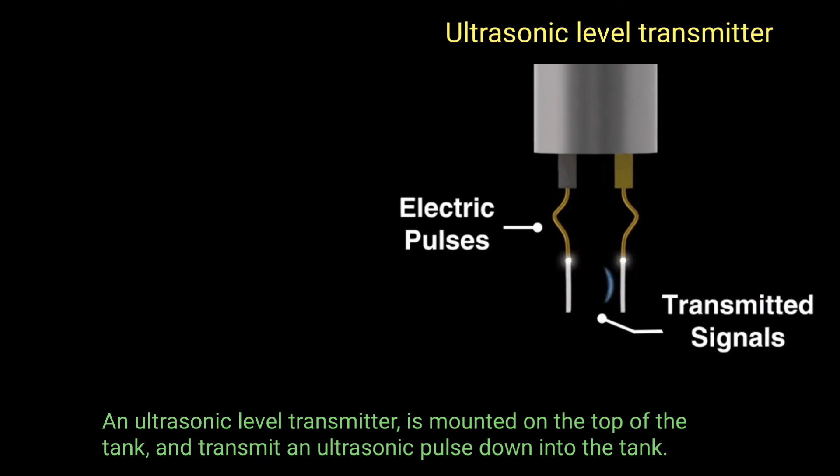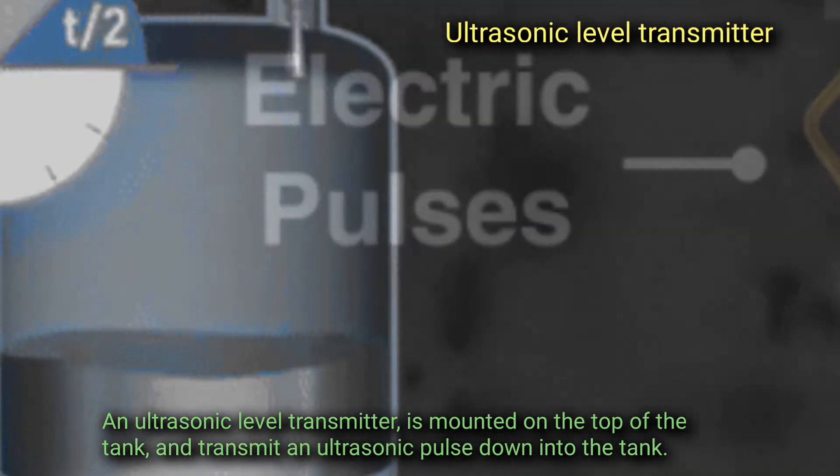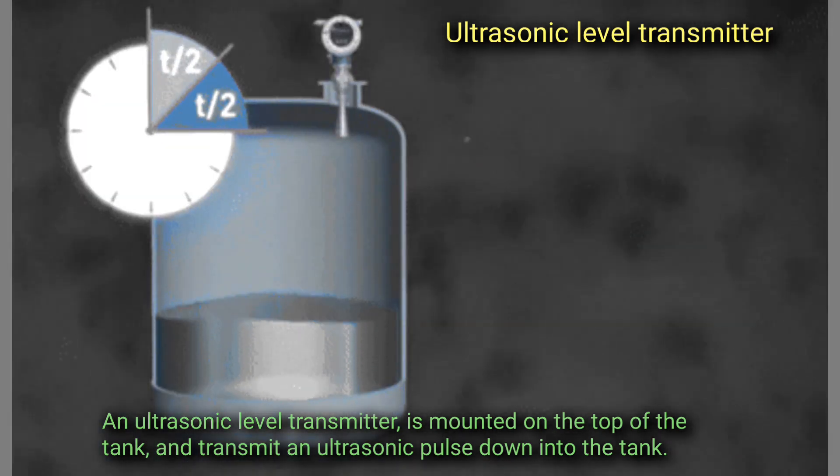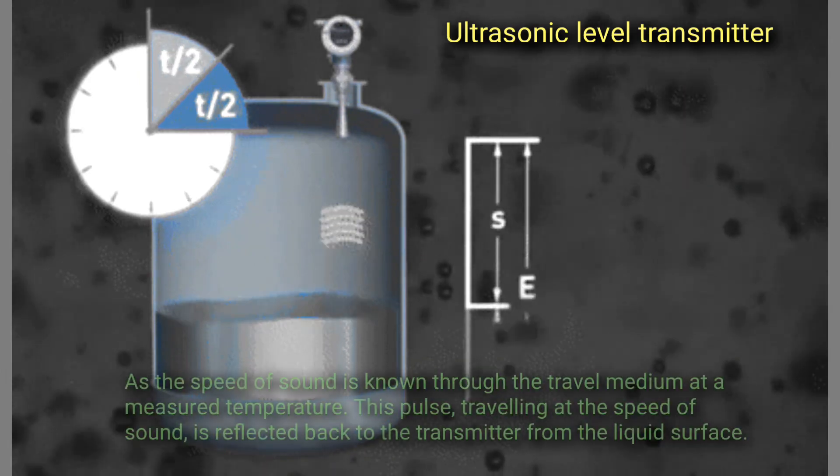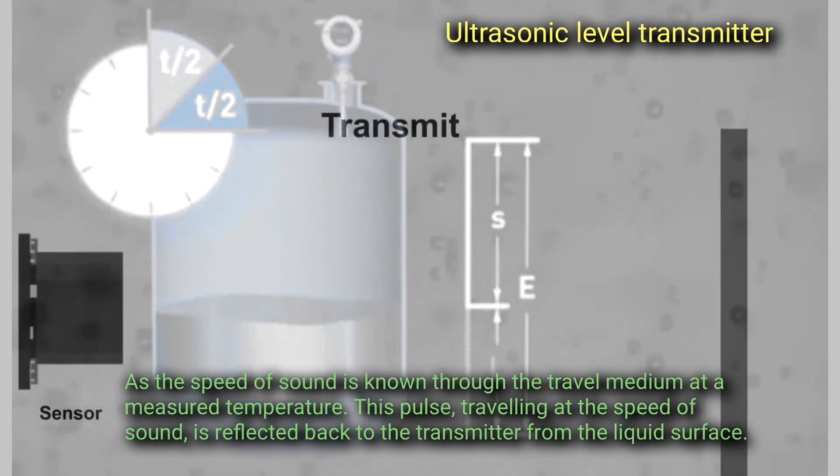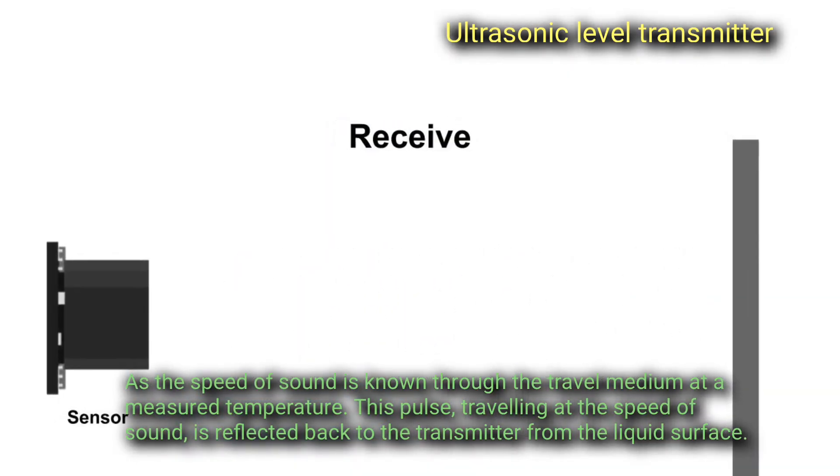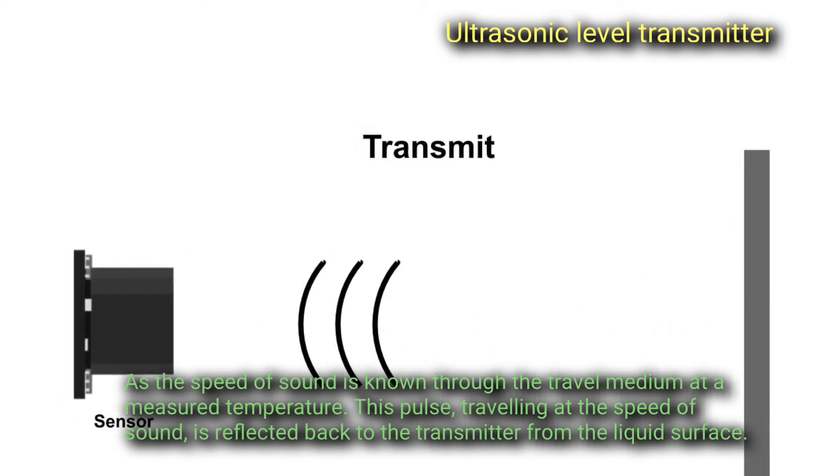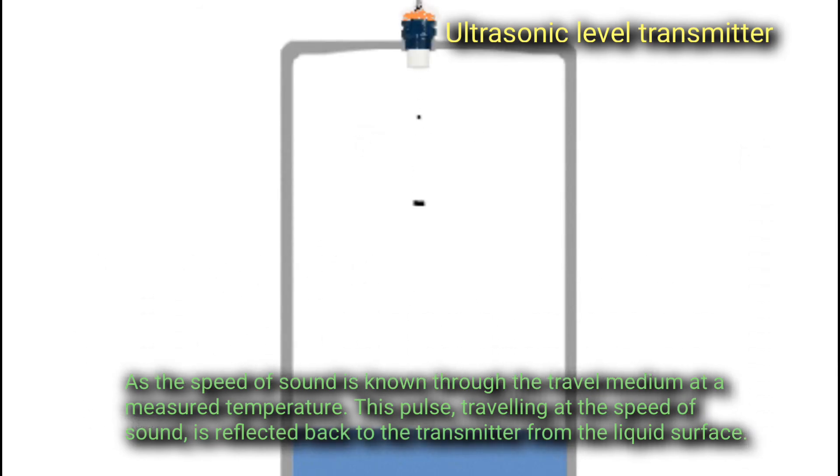An ultrasonic level transmitter is mounted on the top of the tank and transmits an ultrasonic pulse down into the tank. As the speed of sound is known through the travel medium at a measured temperature, this pulse traveling at the speed of sound is reflected back to the transmitter from the liquid surface.